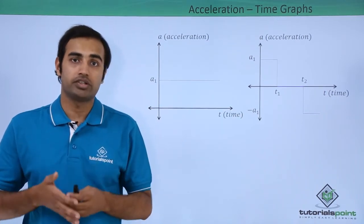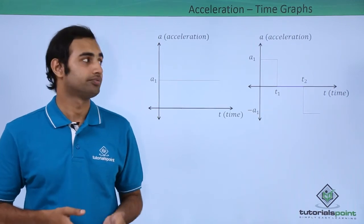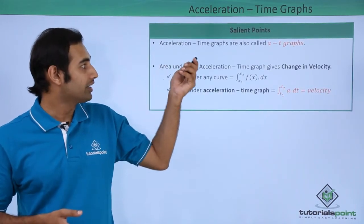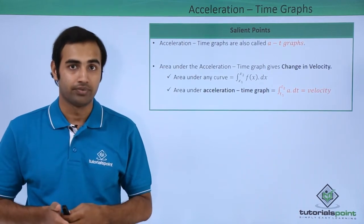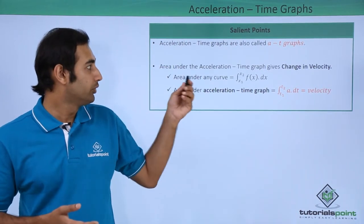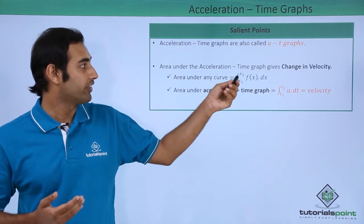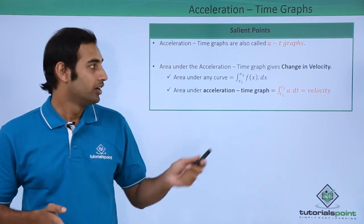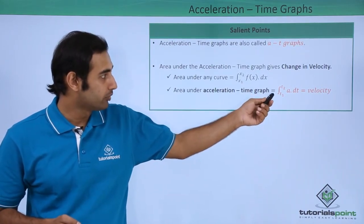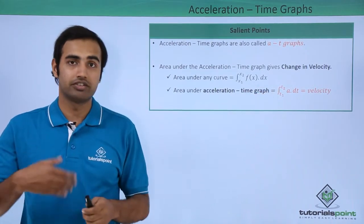Now let's see what all information we can extract from an AT graph. Area under the acceleration time graphs gives us something called change in velocity. Now how does it do that? We know area under any graph is simply given by f(x) dx between the limits x1 and x2 where we are finding the area. Now for an AT graph, this will give us from t1 to t2, A dt, which will give us velocity.